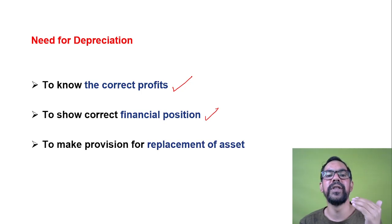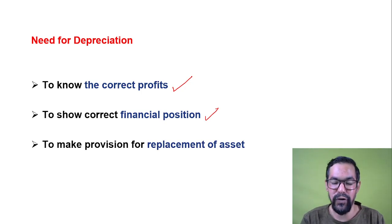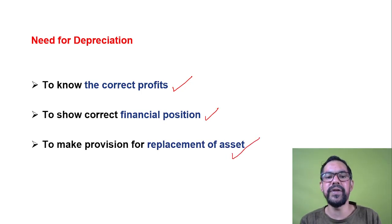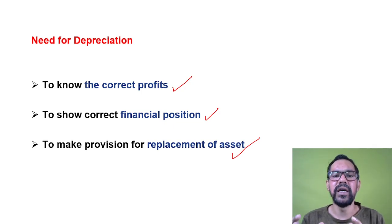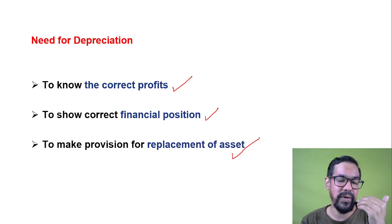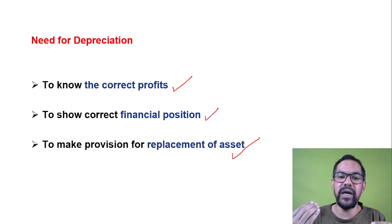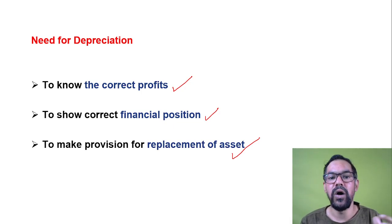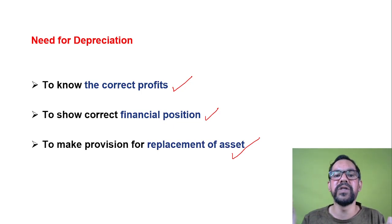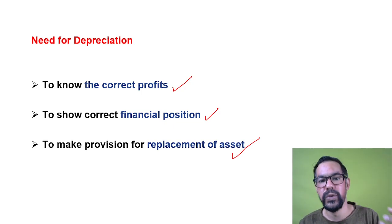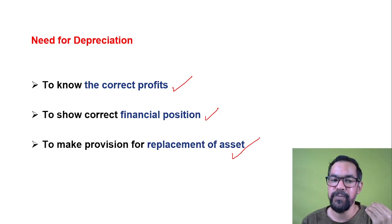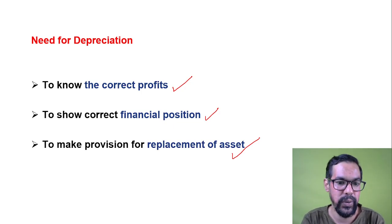Depreciation helps show the correct financial position of a company. Companies have a number of fixed assets whose value gradually decreases, so with proper depreciation calculation you know the exact financial position of those assets. Also, every asset has a life — say a car with a 10-year life needs replacement after 10 years. You create a provision account for this; if the asset depreciates by 1 lakh per year, after 10 years you can buy a new one.